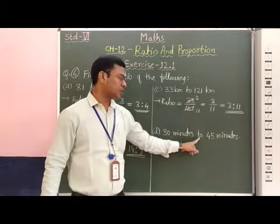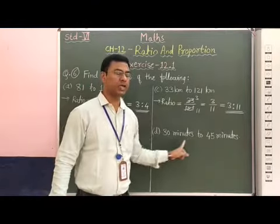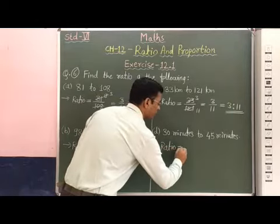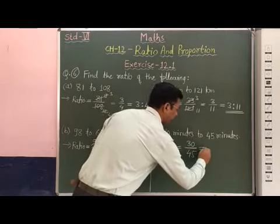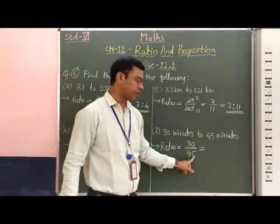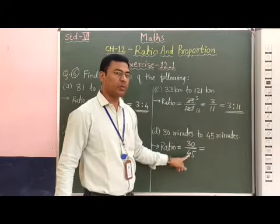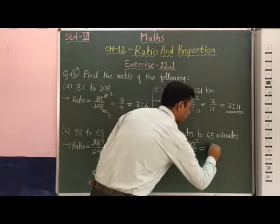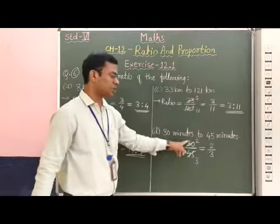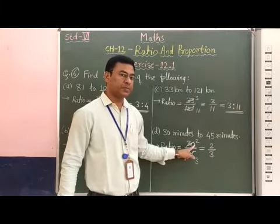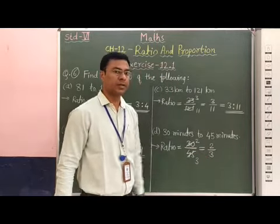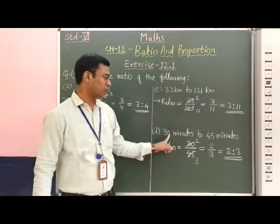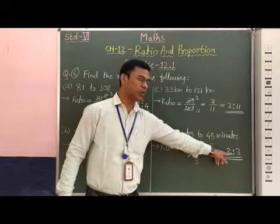Next: 30 minutes to 45 minutes. The units are the same — minutes and minutes — therefore we can find out the ratio. The ratio is equal to 30 by 45. First quantity on numerator, second quantity on denominator. Both 30 and 45 are divisible by 15. 15 twos are 30, and 15 threes are 45. This is equal to 2 by 3. Therefore, the ratio is 2 is to 3. The ratio of 30 minutes to 45 minutes is 2 is to 3.